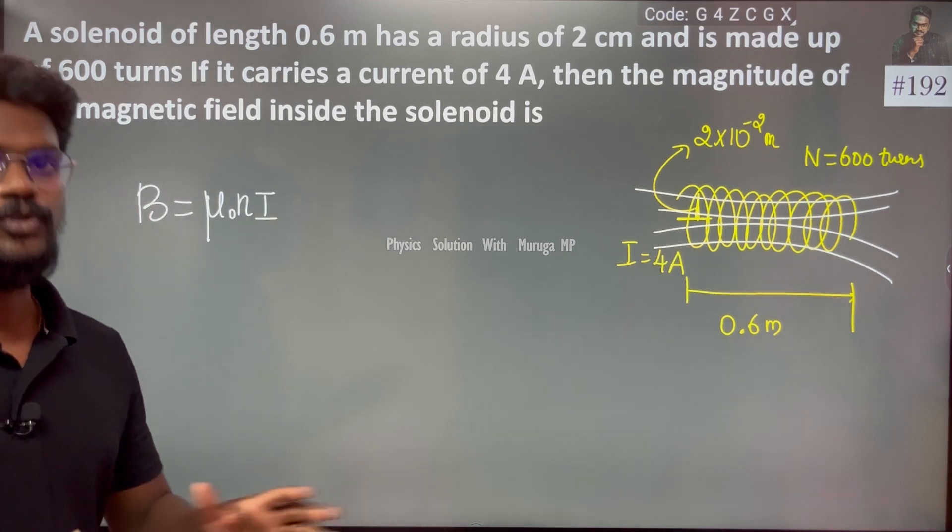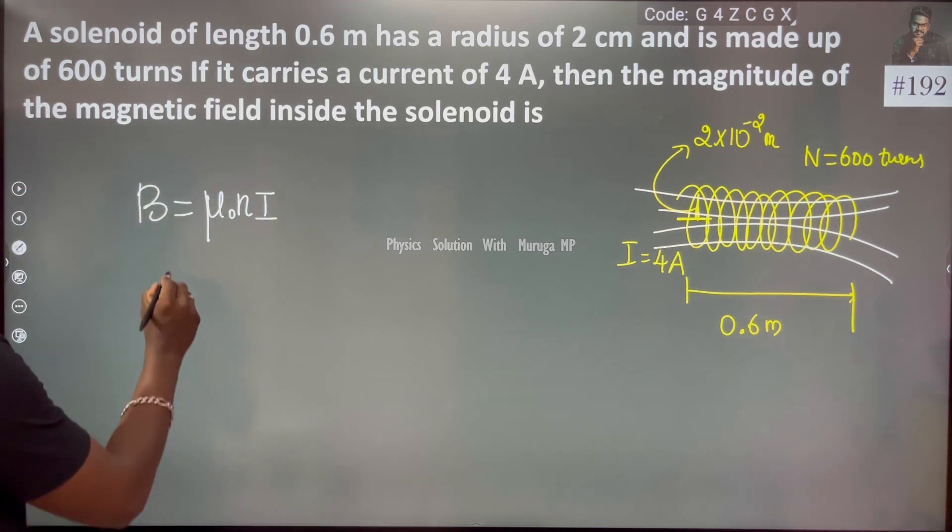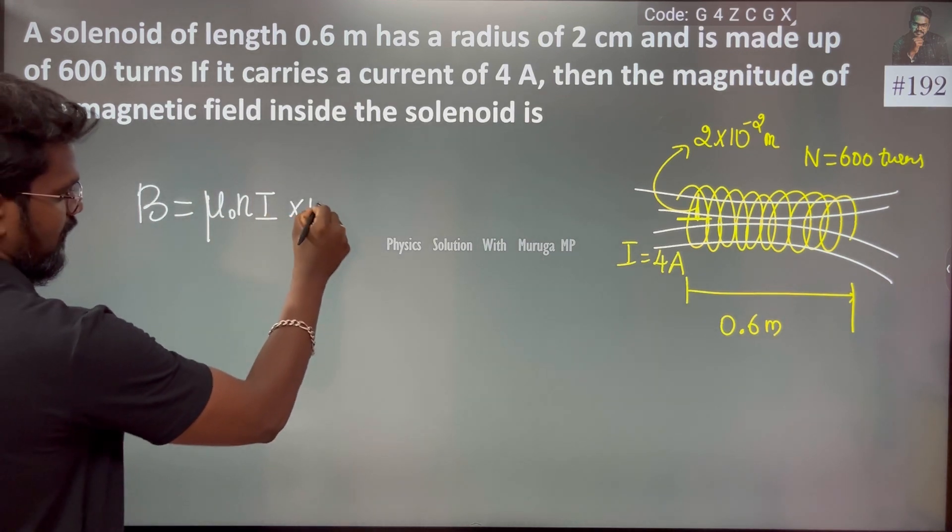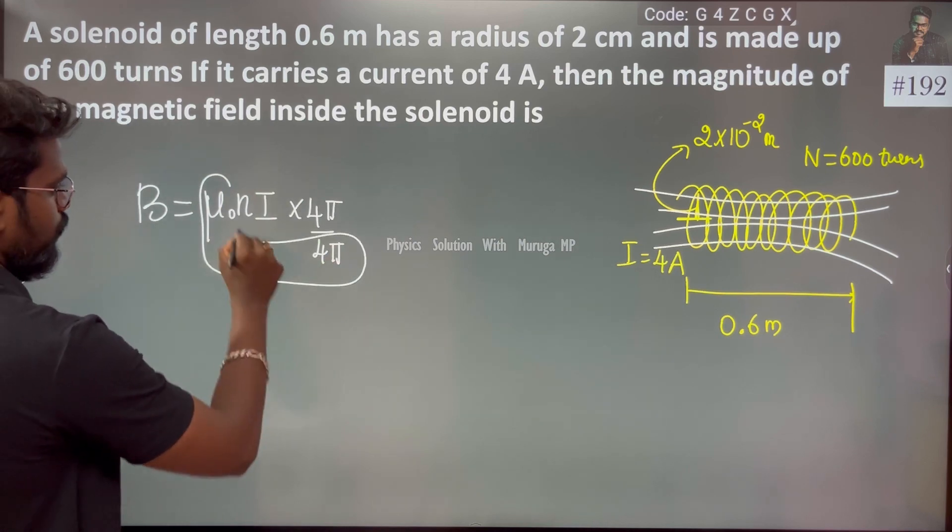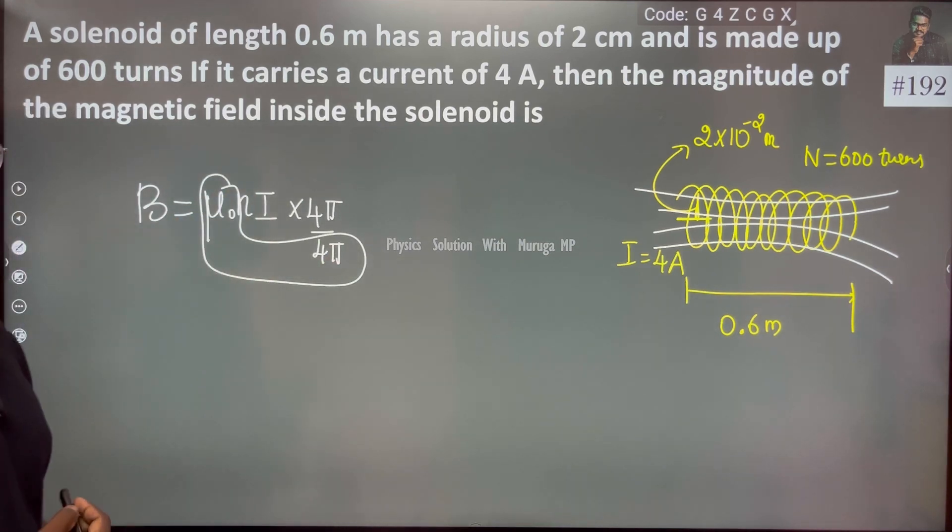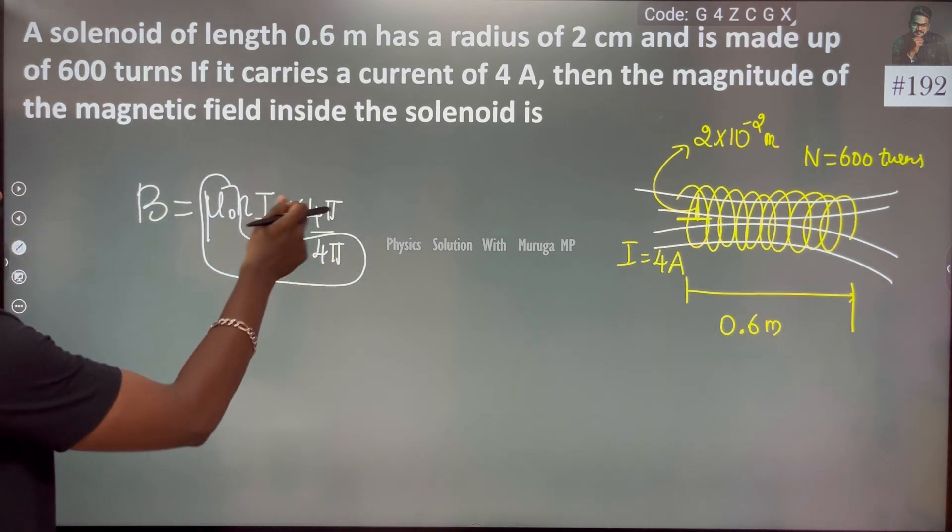To make our calculation simple, we multiply and divide by 4π. μ₀ by 4π has a value of 10 to the power minus 7.